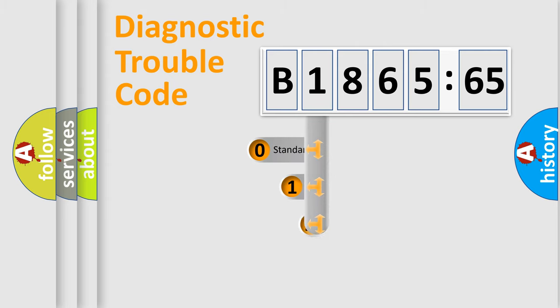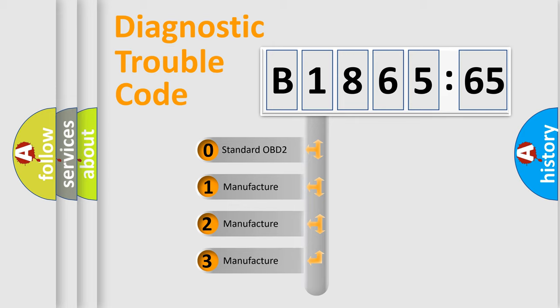Powertrain, Body, Chassis, Network. This distribution is defined in the first character code.